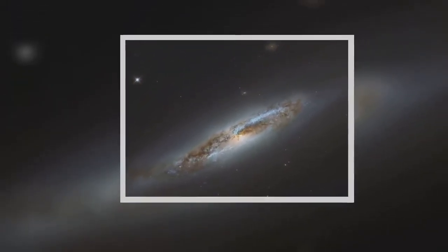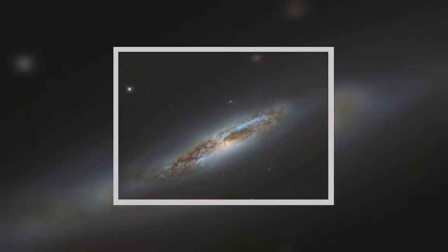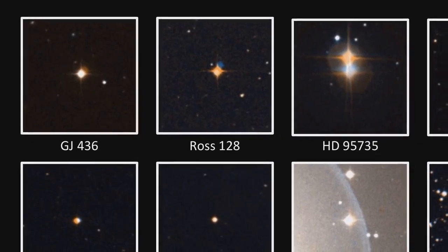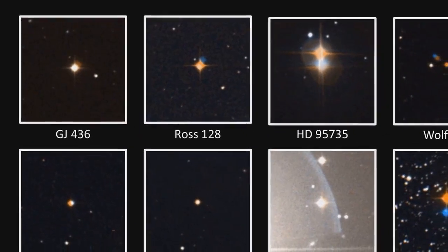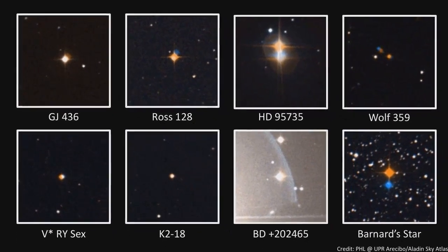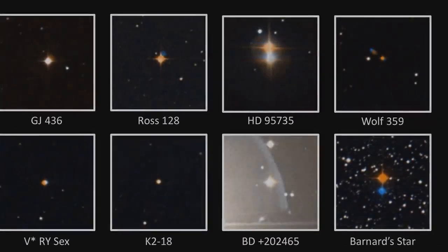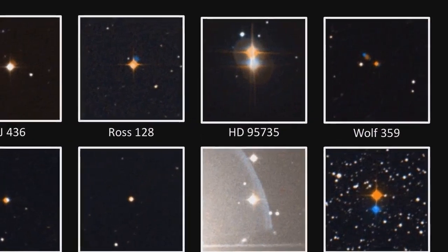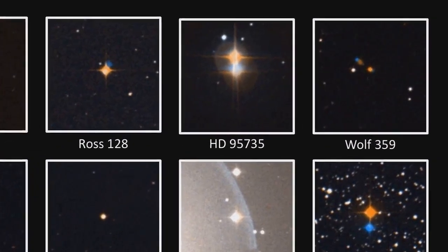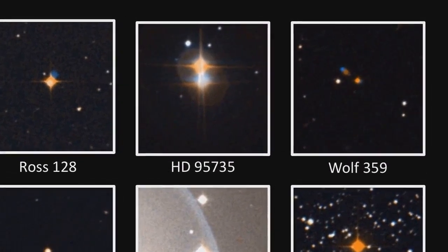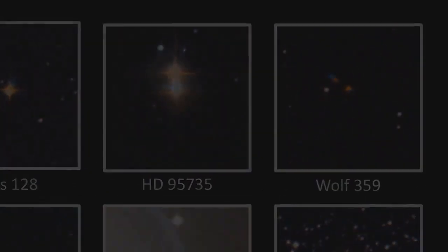In the search for habitable worlds beyond our solar system, astronomers generally look for low-mass, rocky and temperate planets like our own. But these are comparatively difficult to detect. Most of the 3,500 known exoplanets are so-called hot Jupiters—huge gas giants orbiting very close to their parent stars that don't have suitable conditions for life.